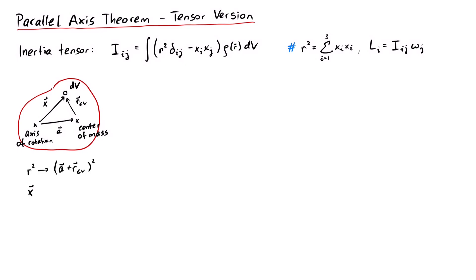For our inertia tensor, this means we have to replace r and x, and we will have to expand all brackets. This might seem tedious, but the result will simplify a lot.